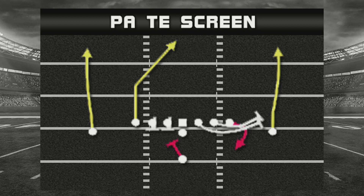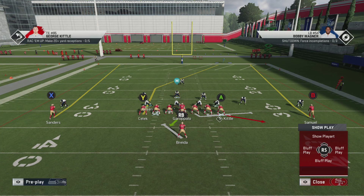The play we're going to show is out of the 49ers playbook — it's called Singleback Ace Play Action TE Screen. This play was added through the new Live Playbooks feature. To find it, you have to switch on Live Playbooks either in the options menu or in the advanced settings on the team selection screen. It's a cool play and I wanted to break it down — something you guys might be interested in running.